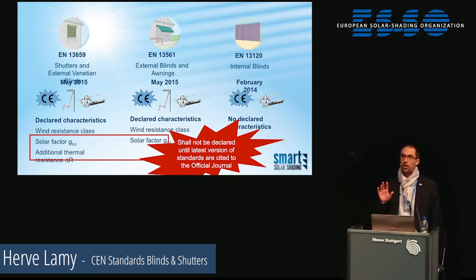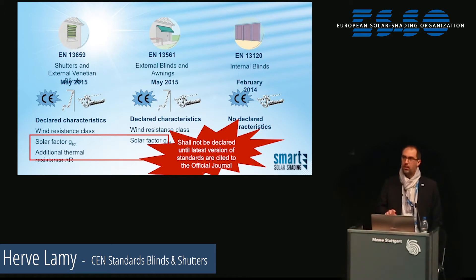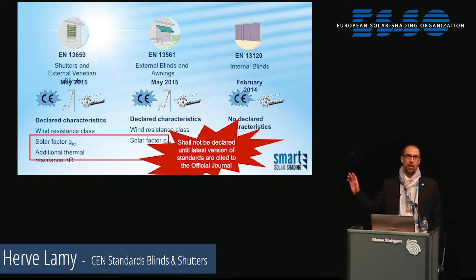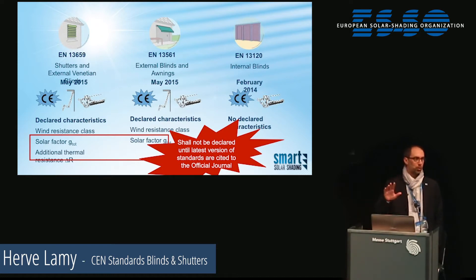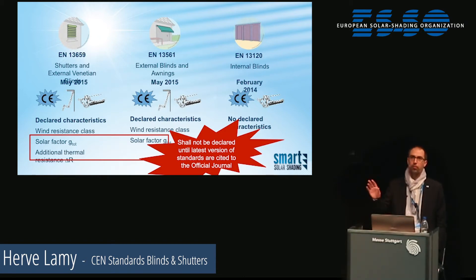Why? Because these two standards have not yet been cited in the official journal of the European Union. So even though the standards themselves include these characteristics, because they have not been officially recognized by the European Commission, you shall not declare them within the CE marking. You can give the classes and values regarding these characteristics in your technical specifications, of course, but they cannot be integrated in the CE marking. This is very important — you will be out of compliance otherwise.